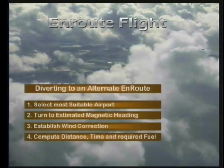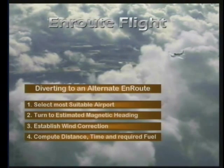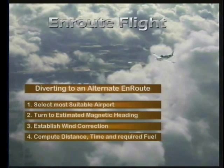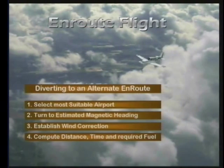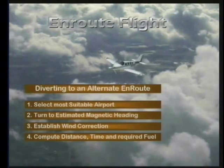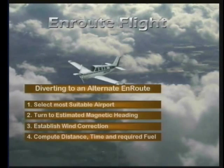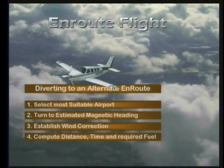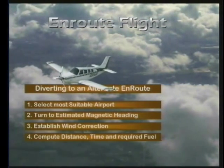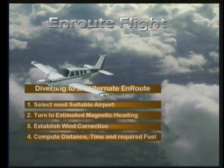We're going to begin with en route flight. When it becomes necessary to divert to an alternate airport, select the most suitable alternate, estimate the magnetic course to the alternate, and turn to the approximate heading to establish this course immediately. After becoming established on the new course, you want to apply the new wind correction and compute the actual distance, estimated time, and fuel required.